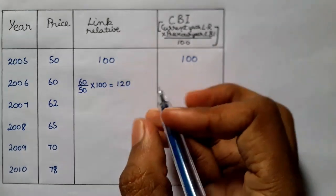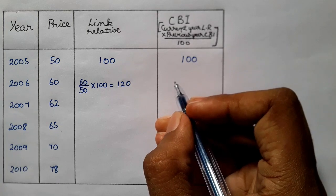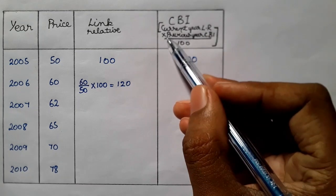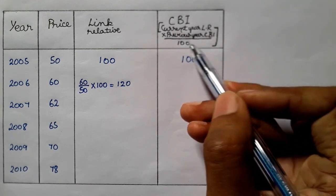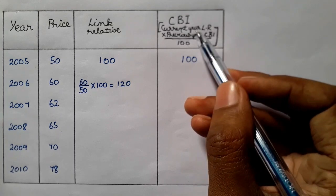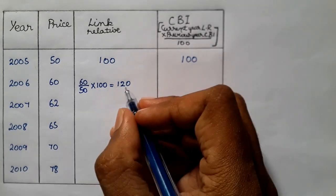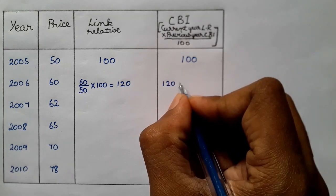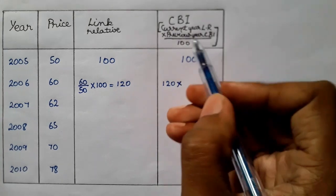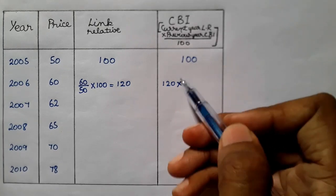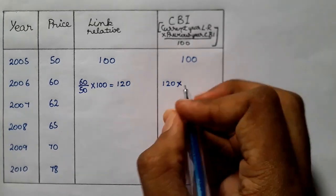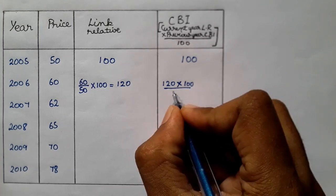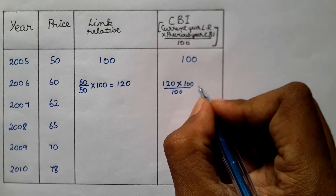Let's look at the solution. Let's look at the chain-based index. How do we get this? Here is a formula. Current year link-related into previous year CBI divided by 100. Current year link-related. Current year is 120. Into previous year chain-based index. Same year. This is previous year. There is 100. So, here is 100. Now, input divided by 100. This will solve.